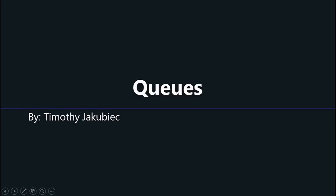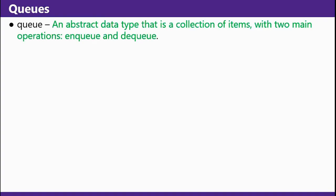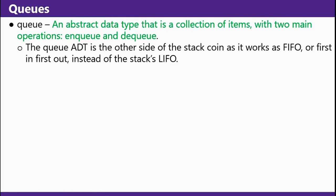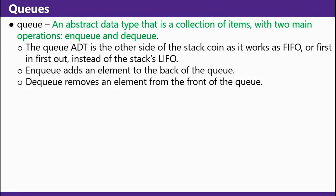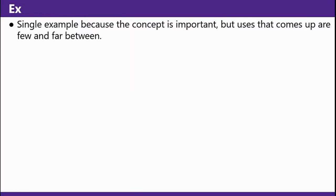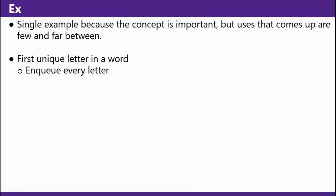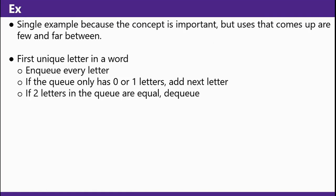Hello and welcome back to Jakubication. This is the next video of Chapter 0 entitled Queues. A queue is an abstract data type that has a collection of items with two main operations: enqueue and dequeue. The queue ADT is the other side of the stack coin as it works as FIFO — first in first out — instead of the stack's LIFO. Enqueue adds an element to the back of the queue. Dequeue removes an element from the front of the queue. An example: the first unique letter in a word. Enqueue every letter. If the queue only has zero or one letters, add the next letter. If the two letters in the queue are equal, dequeue. Else, the answer is what you dequeue.